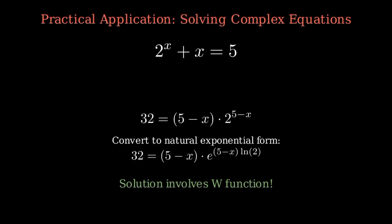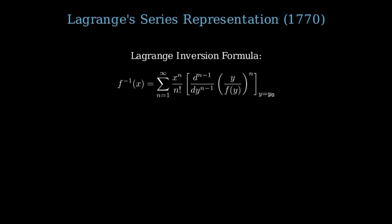The story doesn't end with Euler. In 1770, Joseph-Louis Lagrange made another crucial contribution. Lagrange developed his famous inversion formula, a general method for finding series representations of inverse functions. When applied specifically to the W function, this gives us a beautiful infinite series representation.